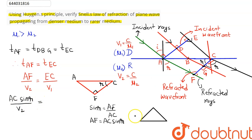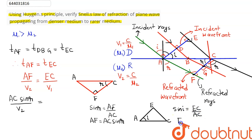Similarly, in triangle AEC, if this angle is i then the angle at A is 90 minus i, making the other angle equal to i. From this geometry, sine of i equals EC divided by AC, which gives EC equals AC times sine i. So EC divided by v1 gives the time for that path, and AF divided by v2 gives the time for the other path.